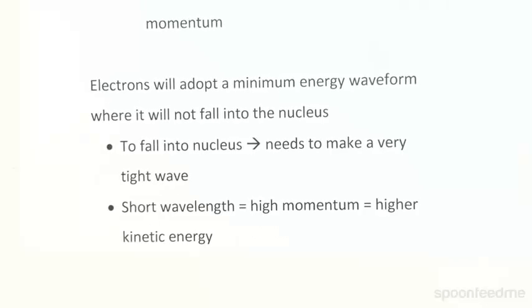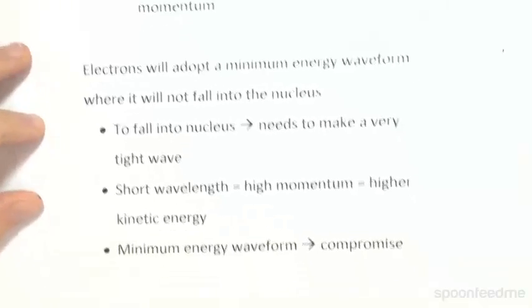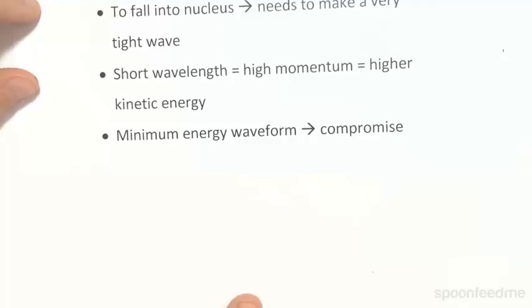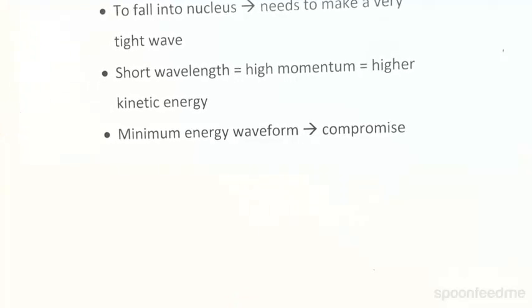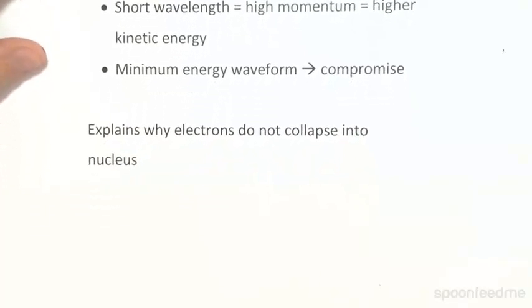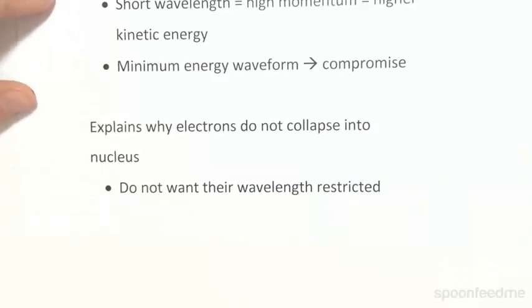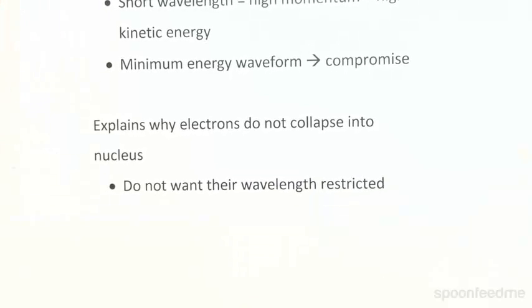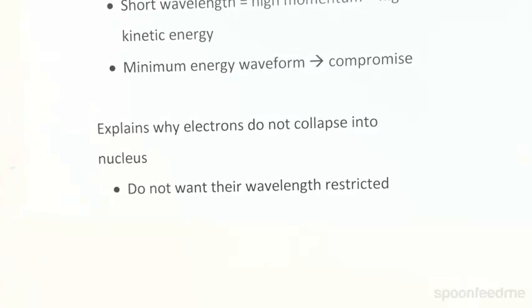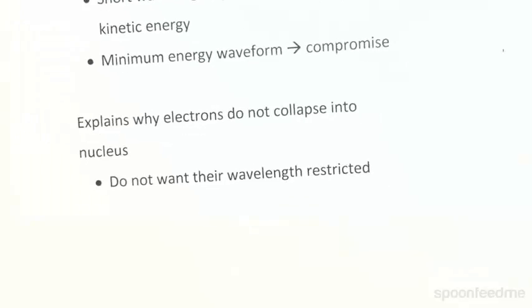Kinetic energy is related to momentum. The minimum energy waveform can be thought of as a compromise. This also explains why electrons don't just collapse into the nucleus — it's due to the momentum and the fact that they resist having their wavelength restricted. They don't want their wavelength to be as small as possible. That's a general overview of why this is so.